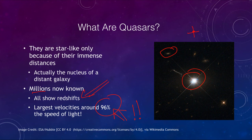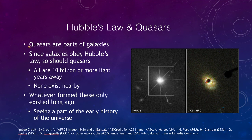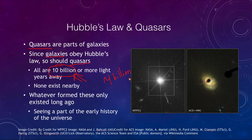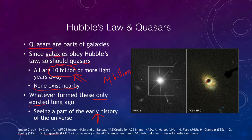Quasars are parts of galaxies, and since galaxies obey Hubble's law, so should quasars. Based on our measurements, every single one of these is at least 10 billion light years away. Our universe is 14 billion years old, so these objects existed in the very first couple of billion years of the universe. There are none nearby. Whatever formed these only existed long ago, making quasars a window into the early history of our universe.